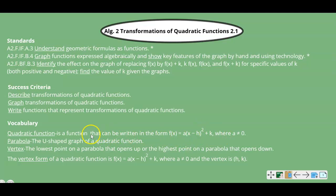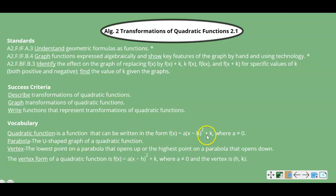This is also vertex form, which you will see. A quadratic function can also be written as y = ax² + bx + c, which is standard form, and we will be looking at that a little later as well. So this is just one way to write a quadratic function, and this is the way that we usually look at it when we're doing transformations.